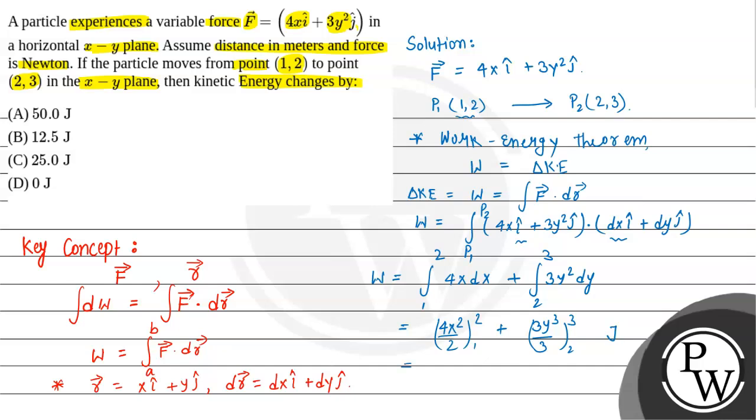Putting all values: 4 divided by 2 is 2 times x², so 2 times (4 minus 1) is 6. Then 3 and 3 cancel, so we get 3³ which is 27 minus 2³ which is 8. So 27 minus 8 is 19, plus 6 is 25.